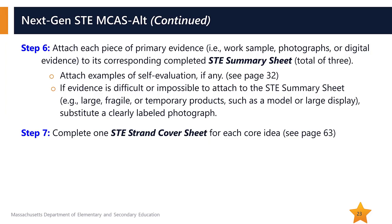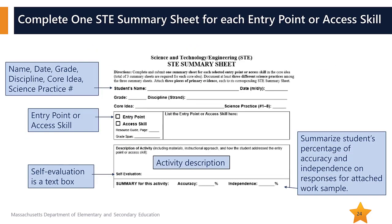You may attach examples of student self-evaluation if they exist. If evidence is too large, fragile, or temporary to fit in the portfolio, substitute a clearly labeled photograph. Then complete an overall strand cover sheet for science for each core idea, so scorers know what they're about to look at. The strand cover sheet lists the numbers of the three practices used, confirms three pieces of evidence are attached, and includes dates, descriptions, and whether self-evaluation was included.